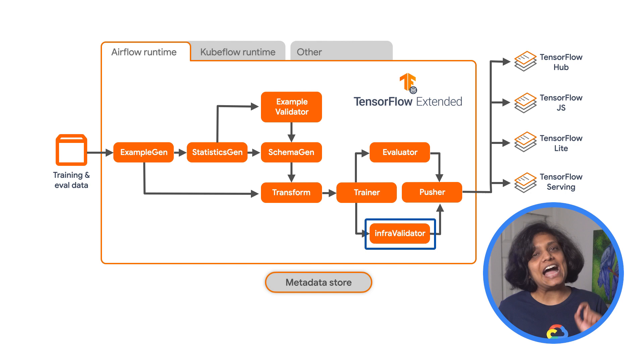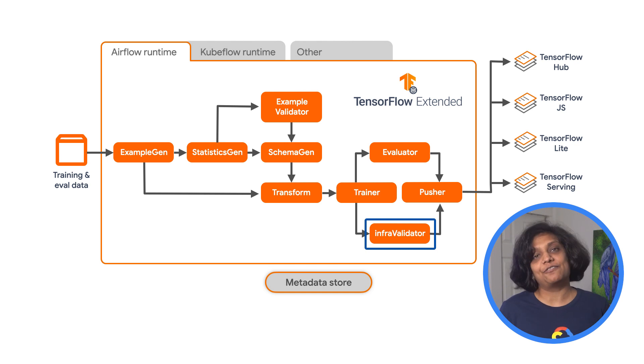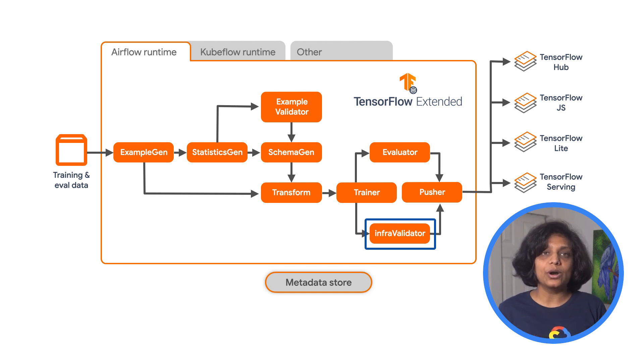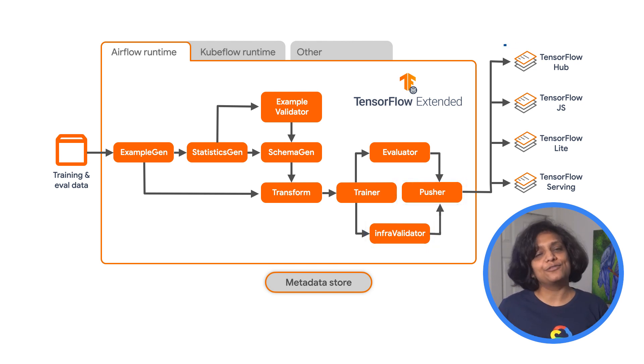InfraValidator makes sure that we can actually deploy our model to our serving infrastructure. If both Evaluator and InfraValidator agree that yes, we can deploy our model — and the Evaluator has confirmed that the model is actually better than what we have in production — then the Pusher will push it to one of our deployment targets. That was a quick overview of TensorFlow Extended, which helps us engineer our machine learning pipelines so we can deploy our models in production. In the next episode, we will see TFX and Kubeflow Pipelines in action in Cloud AI Platform Pipelines. Until then, I would love to hear the topics that will help you get better at machine learning and AI — drop them in the comments below, and don't forget to like and subscribe.